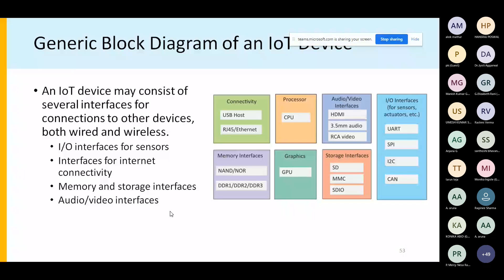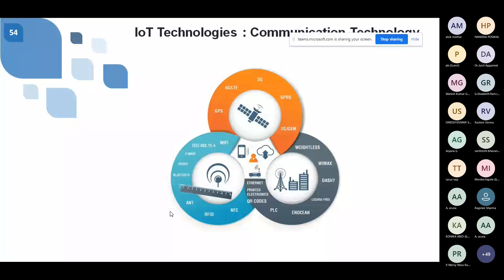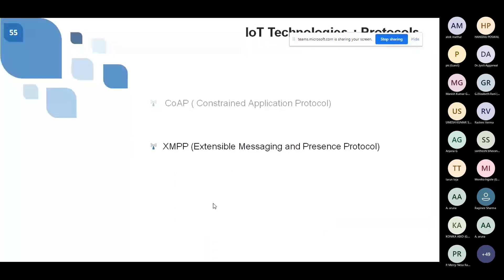This is where we concluded yesterday — how all these multiple wireless communication technologies relate to each other. GPS provides last-mile connectivity, WiMAX handles access-point-to-access-point communication, and other technologies such as WPAN are used for very short distances within meters only.